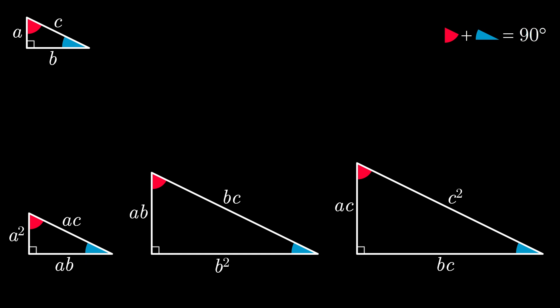Now let's take a look at the triangle that has a hypotenuse length of C squared. Notice that the other sides of this triangle have lengths of AC and BC, which are also the hypotenuse lengths of our other two scaled triangles.